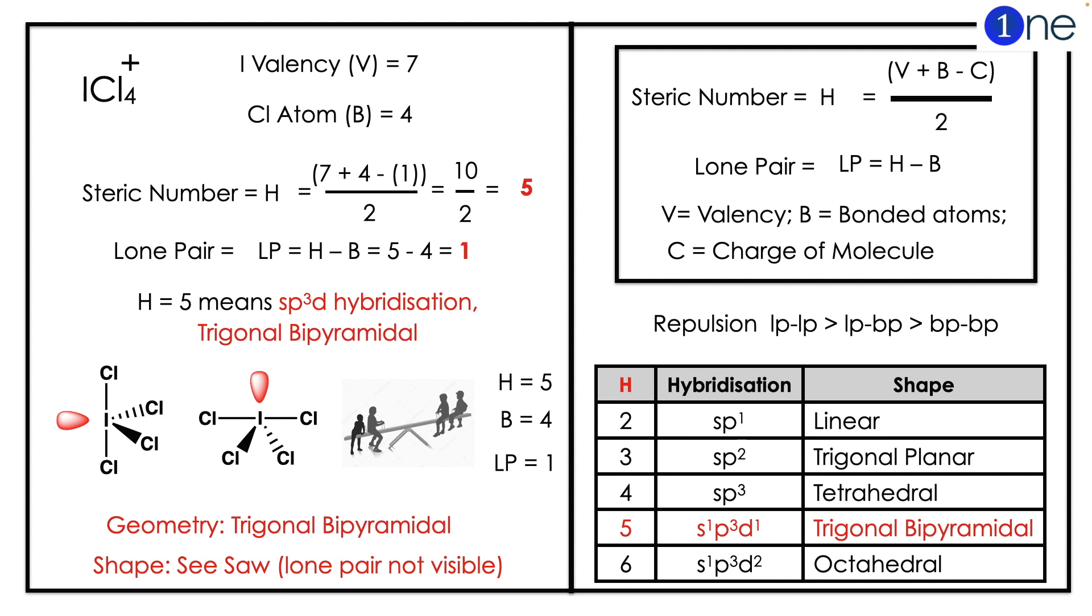So you have H equals 5, which is sp3d hybridization, which is trigonal bipyramidal structure with a lone pair.